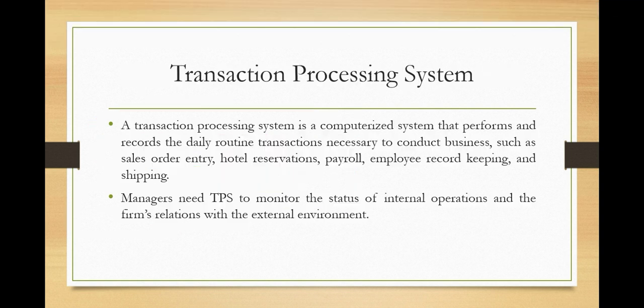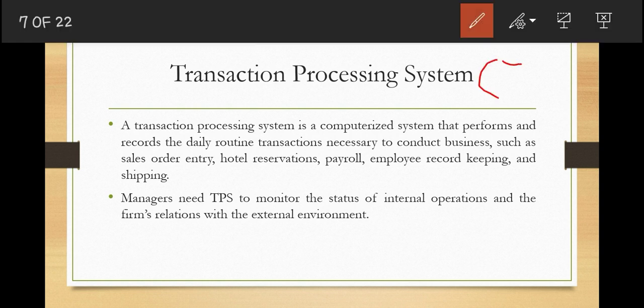We start with the Transaction Processing System, or TPS. Operational managers need systems that can keep track of the elemental activities, primary activities, and transactions of the organization. For example, they need systems that record sales, receipts, cash deposits, payroll, credit decisions, and the flow of materials in a factory — information relating to day-to-day activity.